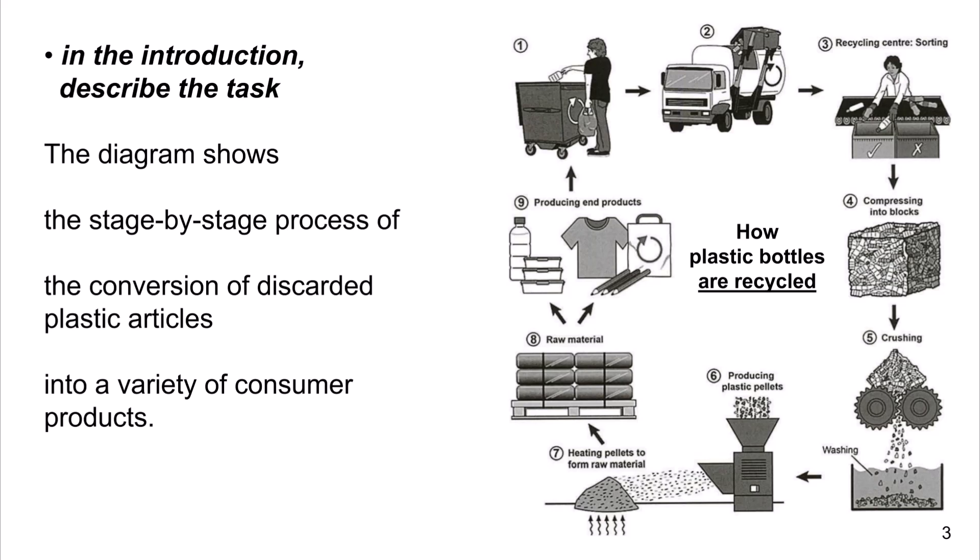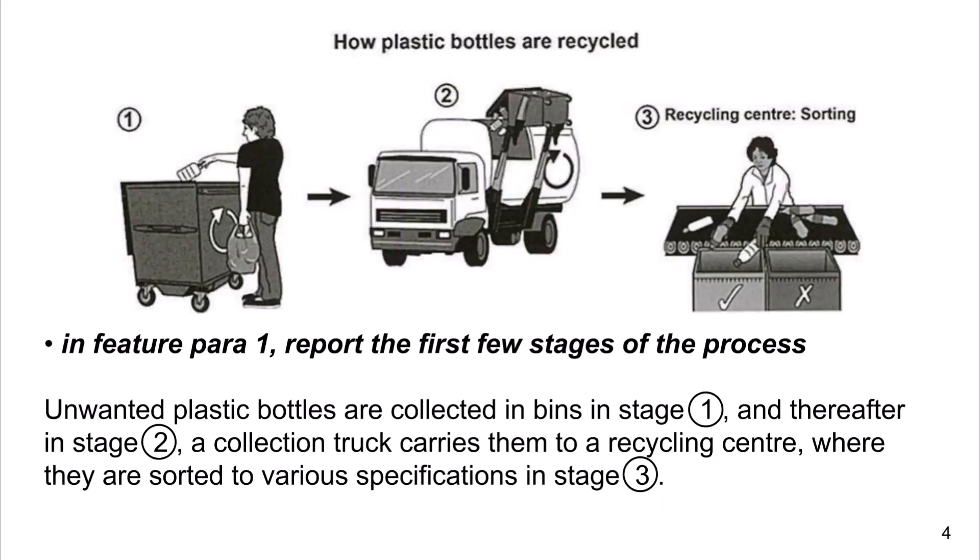In Feature Para 1, report the first few stages of the process. Unwanted plastic bottles are collected in bins in stage 1. And thereafter in stage 2, a collection truck carries them to a recycling center, where they are sorted to various specifications in stage 3.